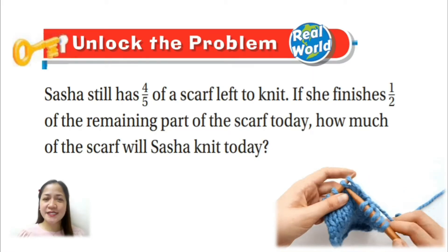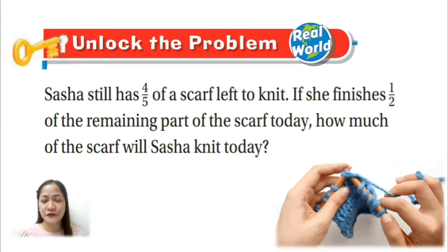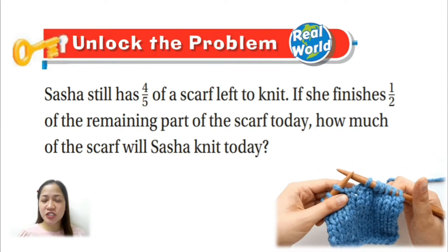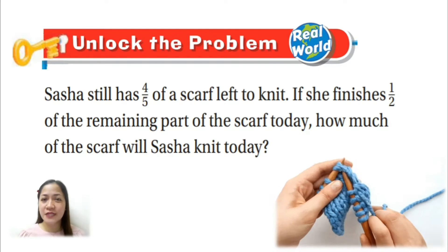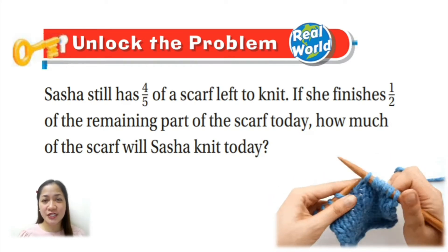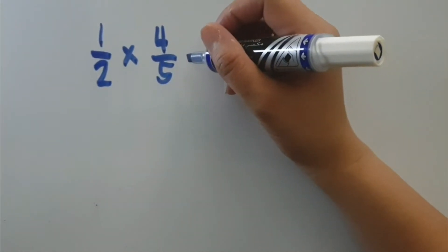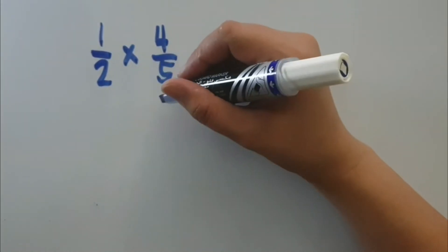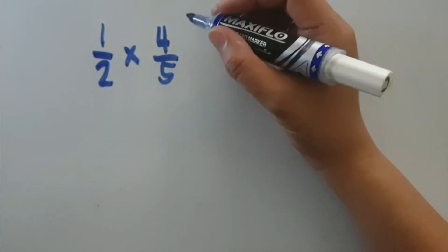Sasha still has four-fifths of a scarf left to knit. If she finishes one-half of the remaining part of the scarf today, how much of the scarf will Sasha knit today? To solve the problem, we need to multiply one-half and four-fifths, and then we will write the product in simplest form.